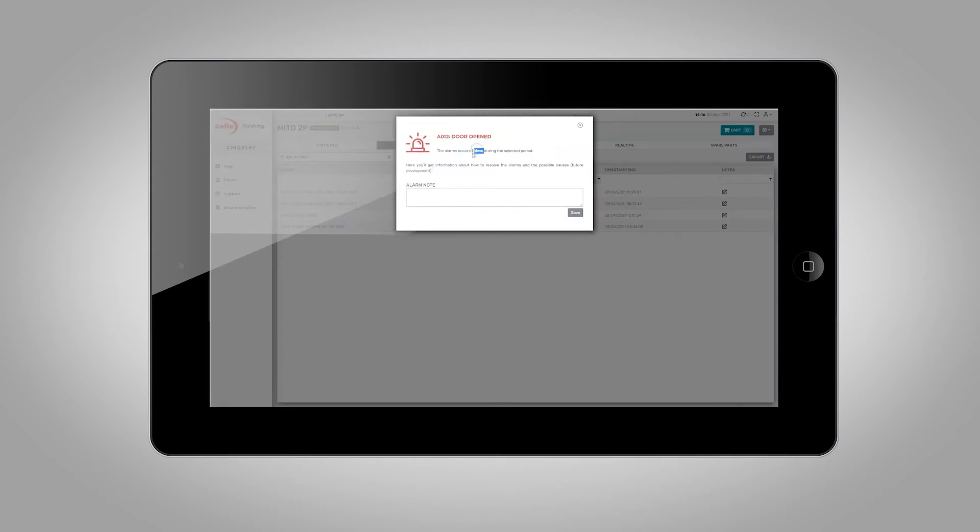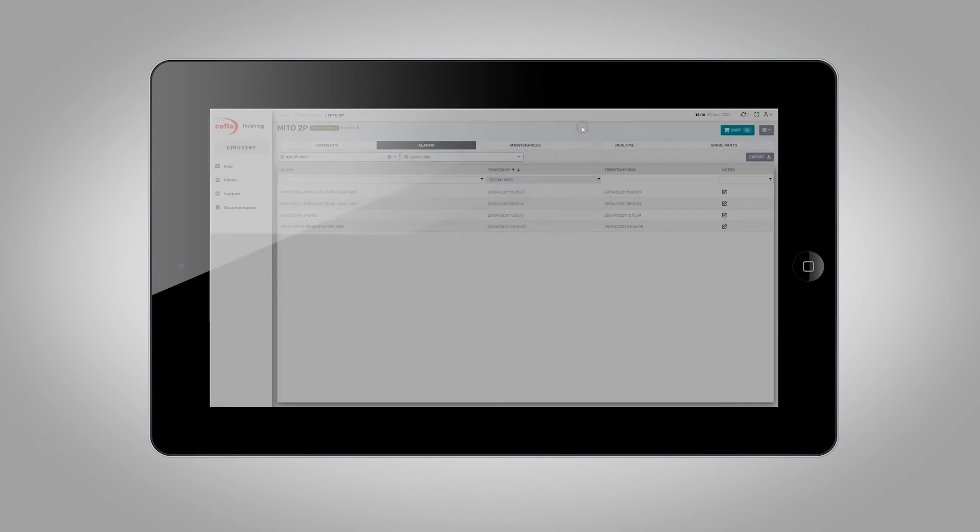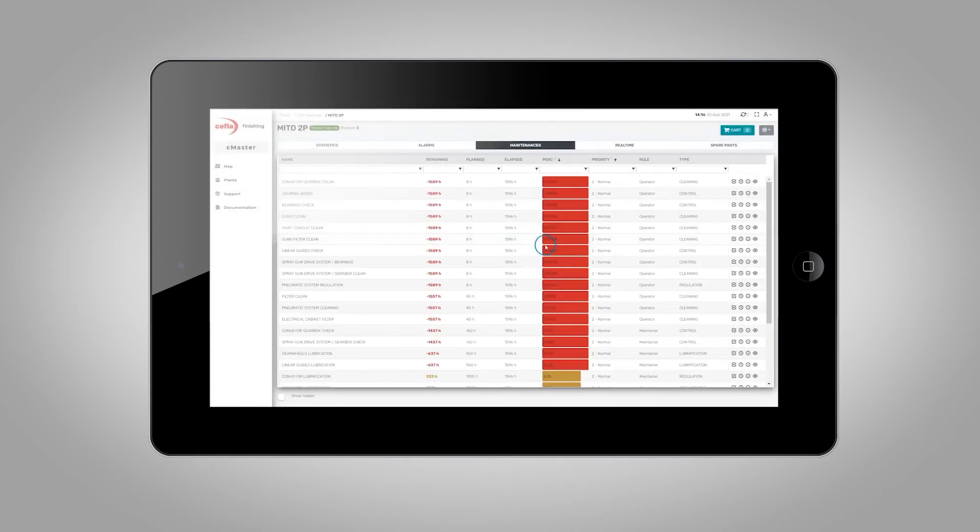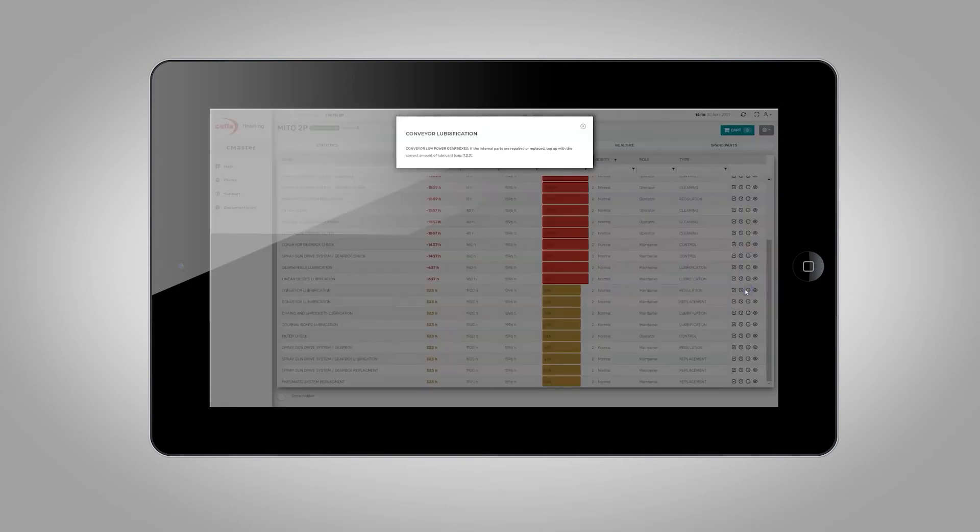Unlike similar software solutions, C-Master has been developed around Schaeffler finishing equipment and technologies. It is not a commercial software tool based on a shared platform, but it is designed to allow selected, specific data to be analyzed.